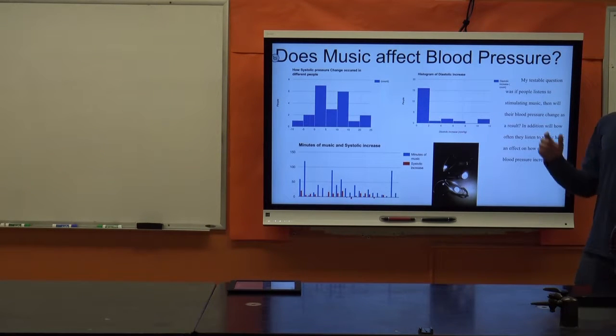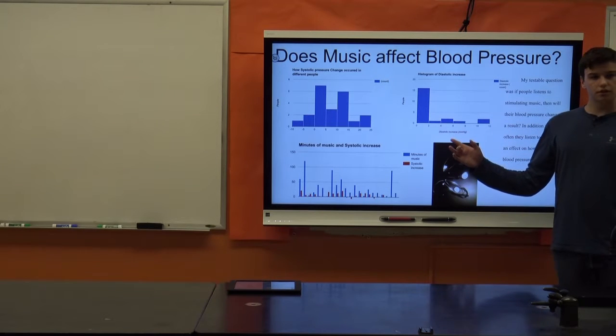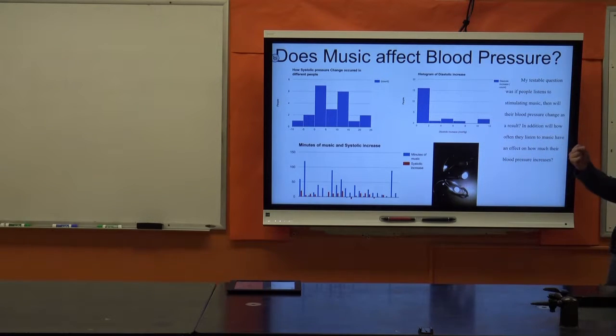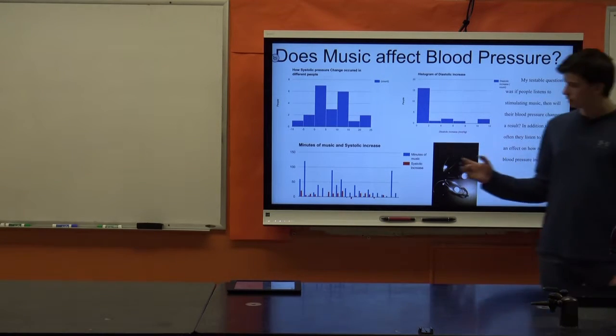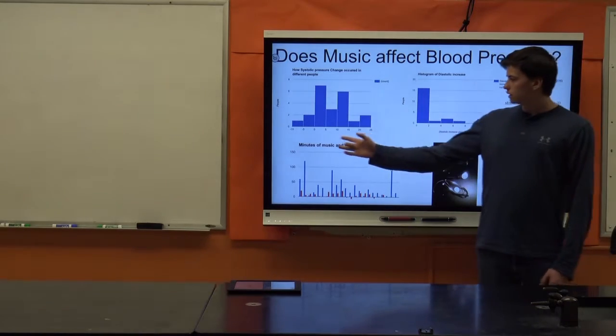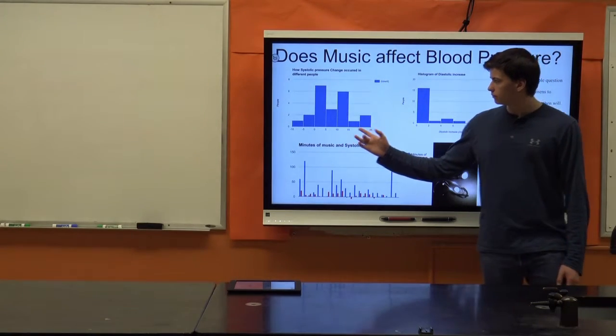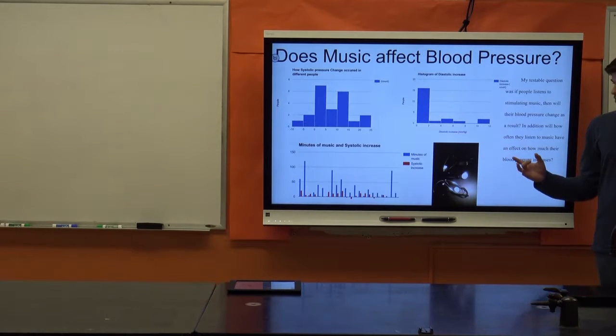What I found was people's systolic blood pressure—and that's their blood pressure while their heart is contracting—did increase slightly, mostly between 0 and 15 millimeters of mercury, which is just a unit of pressure.